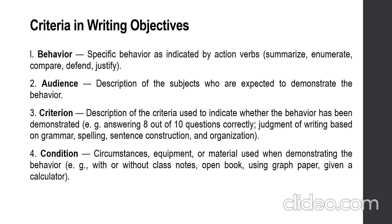In writing your objectives, you have to consider four criteria. First is behavior, which refers to a specific behavior as indicated by action words — for example: summarize, enumerate, compare, defend, and justify, and many more. Second is audience, which refers to the description of the subjects or those expected to demonstrate the behavior.